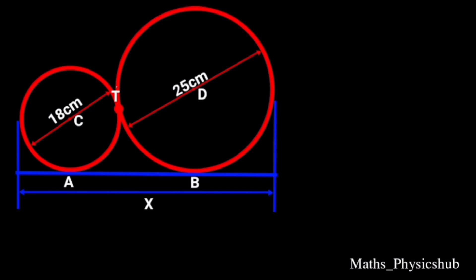This diagram shows two circles with centers C and D touching externally at point T. If both circles have a common tangent AB and the diameters of the circles are 18 cm and 25 cm, find the distance indicated by letter X.